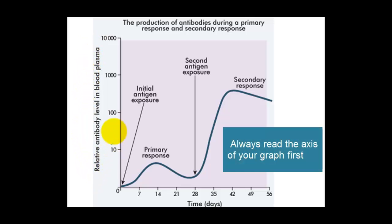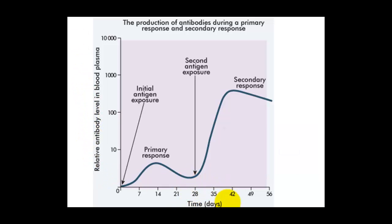This axis here is our antibody level in the plasma, and on our x-axis here is the time. We have two responses — two times we've had the disease: the primary response, and then the secondary response. Let's have a look at the differences between those two.